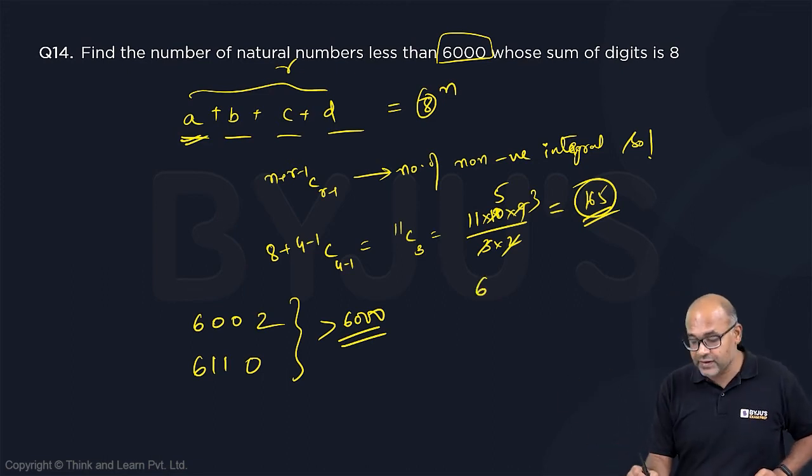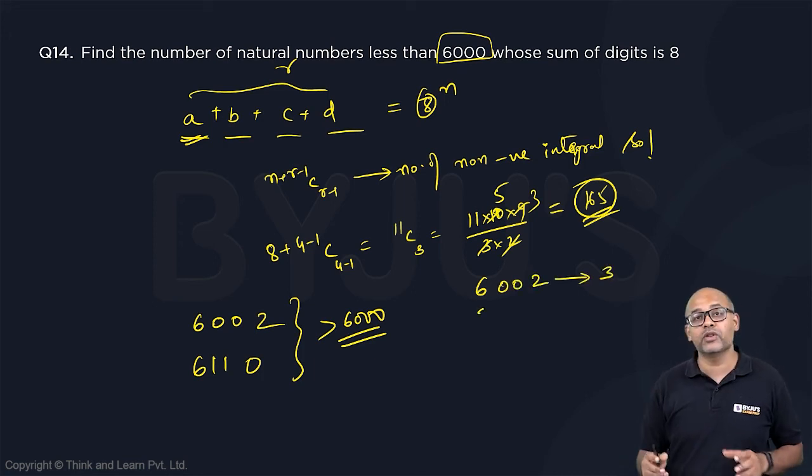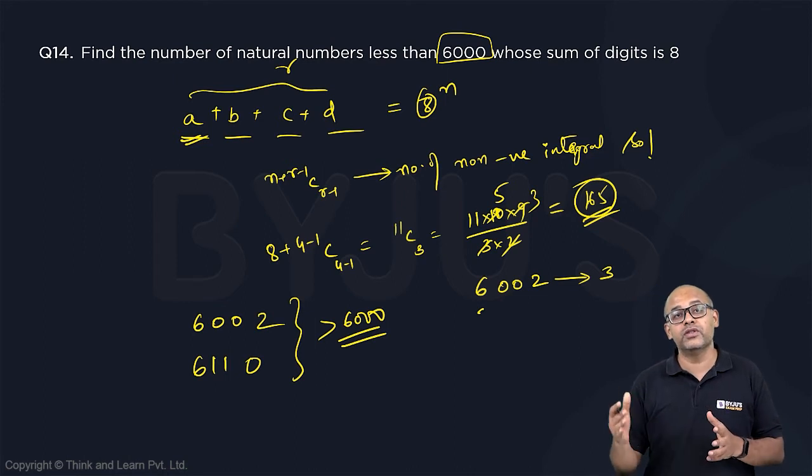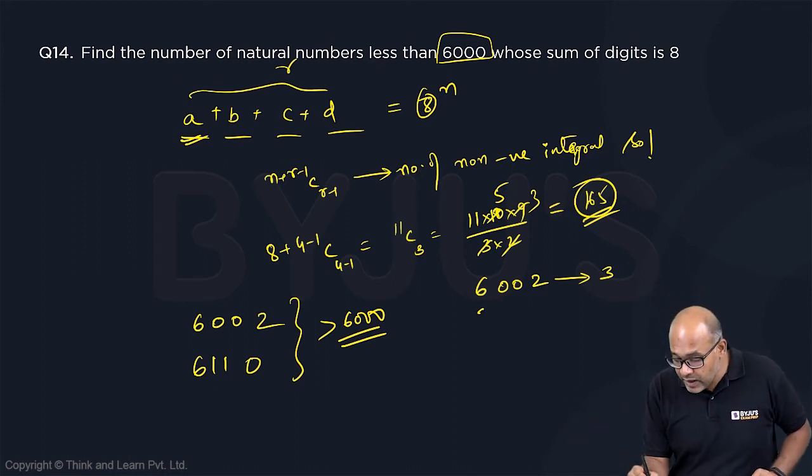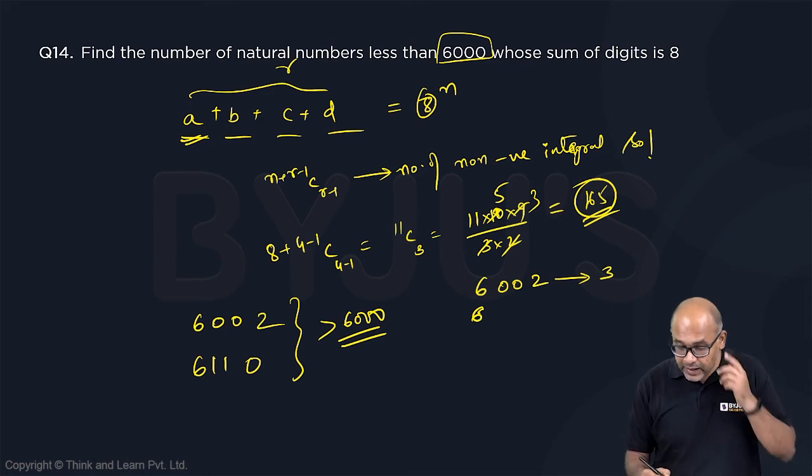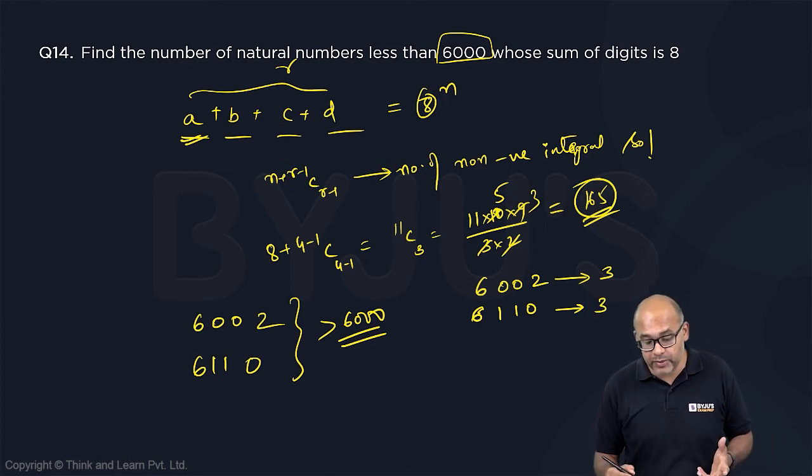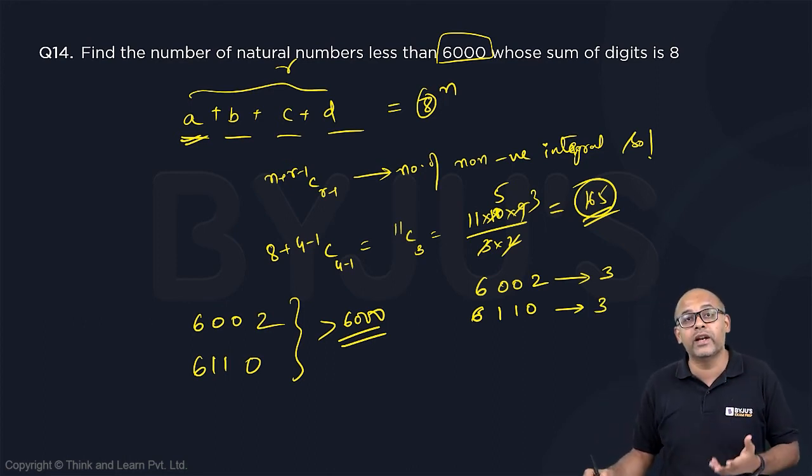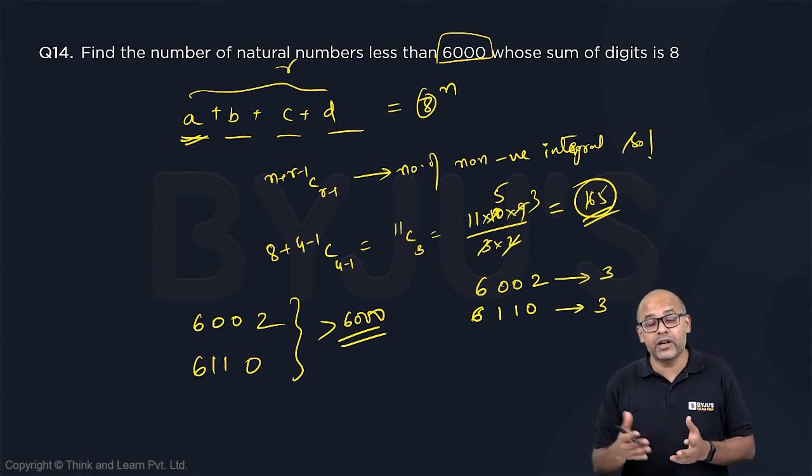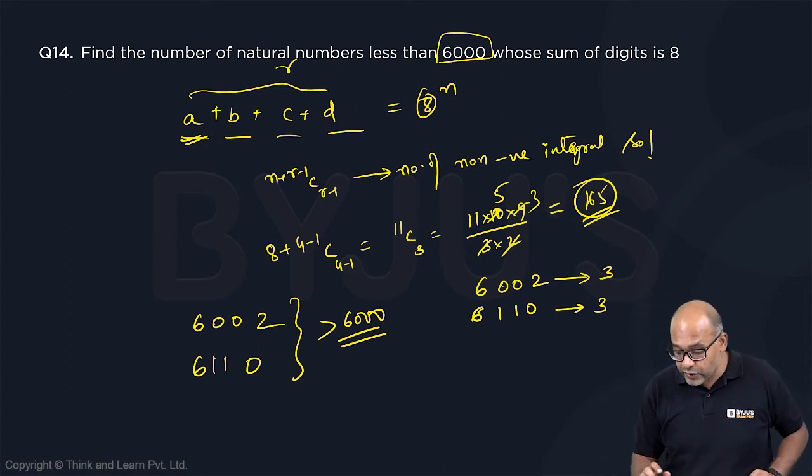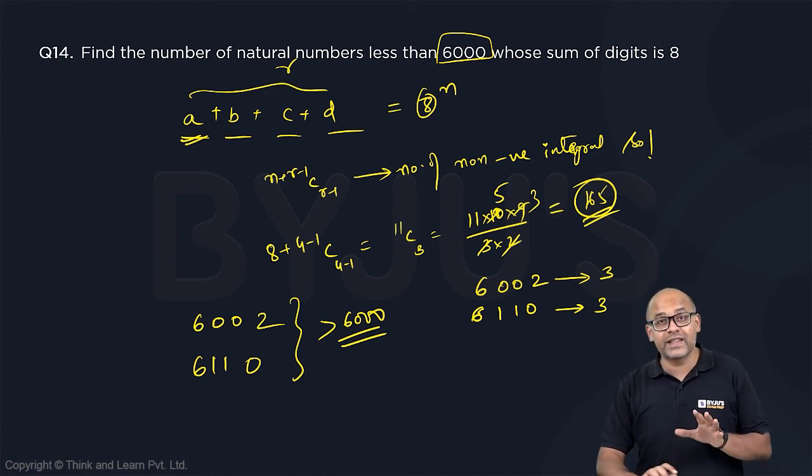So if I fix 6 then the remaining can be 002 and like this I will have three possibilities because 6002, 6020, 6200. Similarly if I take 6110 I will again have 3 possibilities. What are the 3 possibilities? 6110, 6101, and 6011. So that's these are the 6. What else can I have? I will also have the total, so this is only possible using 6. Now all 6's are done.